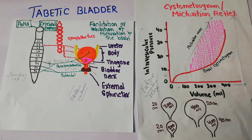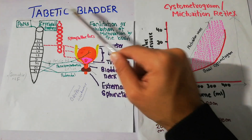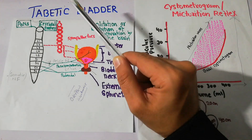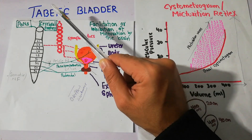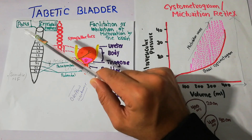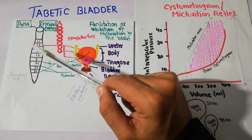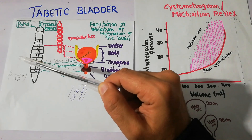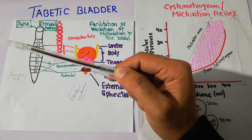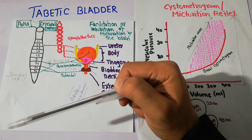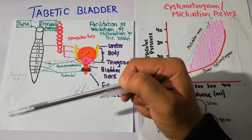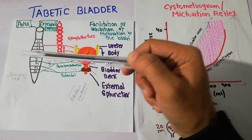Today in this lecture we are going to talk about Taptic Bladder. Taptic Bladder occurs due to a condition known as Tabes dorsalis, which is basically caused by a bacterial infection known as syphilis, which is very common.